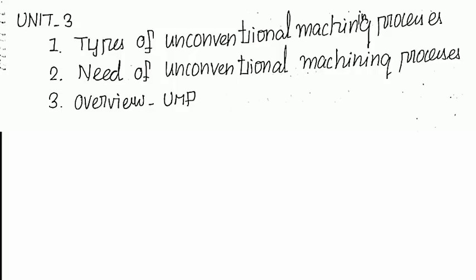What we have done is: we have a conventional machine process, we have a tool, and we have a workpiece, and we have direct contact between the workpiece and the tool — that is a conventional machine process. This is an unconventional machine process. In the conventional machine process, the tool is in direct contact and we have better surface finish and better productivity. The cost concern is about the economic status.